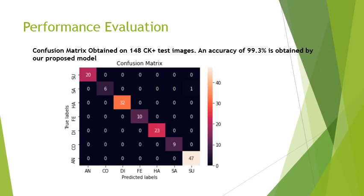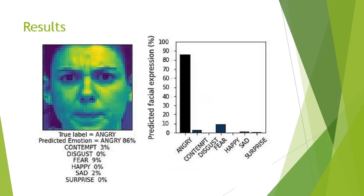The proposed model achieved an accuracy of 99.3 percent in predicting the emotions of 148 CK+ test images. As you can see in the confusion matrix: AN = anger, CO = contempt, DI = disgust, FE = fear, HA = happy, SA = sad, SU = surprise. There is only one misclassification — the true label is 'sad' but the model predicted it as 'surprise'.